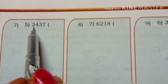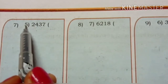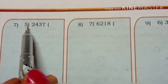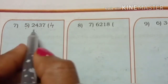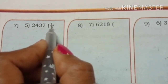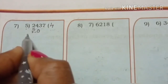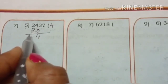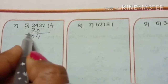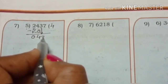We divide the thousands. We divide 4 times 5 for 20. Write 4 as the first digit of the quotient and write 20 here. 4 minus 0 is 4, 2 minus 2 is 0. Now bring down 3.